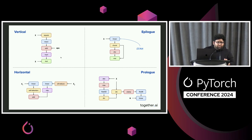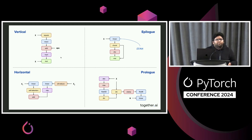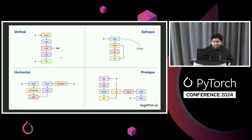Then there's horizontal fusion, which you don't typically see in LLaMA, but you do see in models like Phi or other models that do parallel MLP or parallel attention — back in the day with GPT-NeoX and similar. And then there's prolog fusion. This example is doing activation quantization along with scaling down the activation and then doing the GEMM in FP8 — so that's prolog fusion, which is the entry into the GEMM.